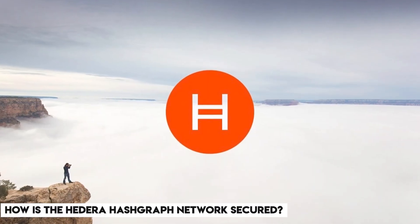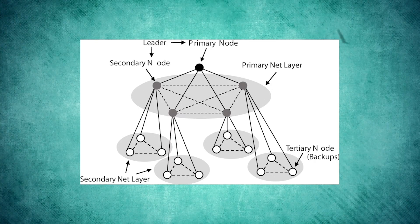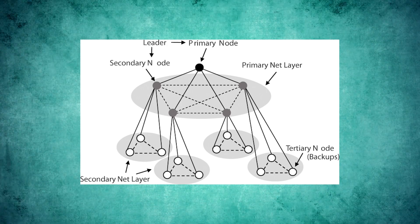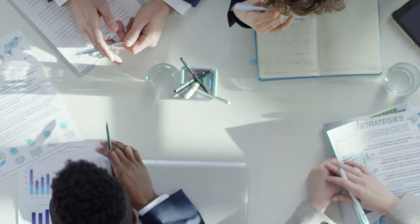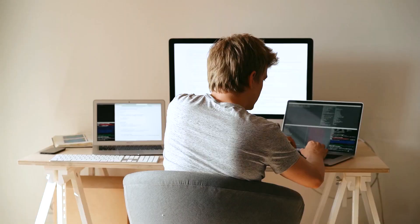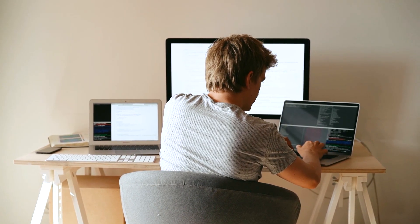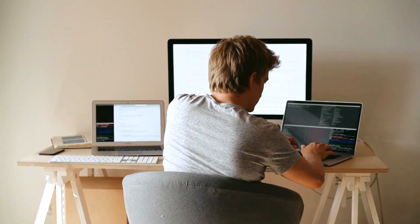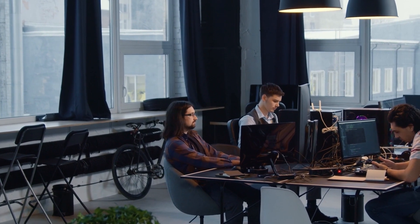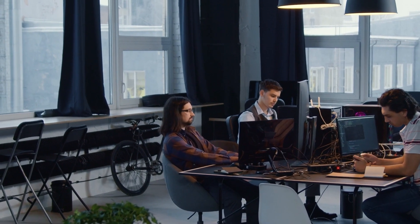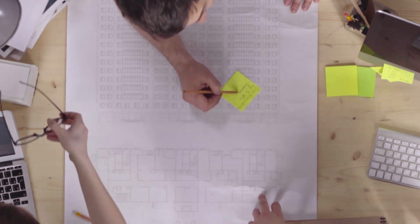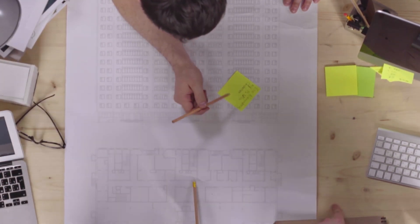How is the Hedera Hashgraph network secured? The Asynchronous Byzantine Fault-Tolerant (ABFT) Consensus Algorithm is used by the Hedera Hashgraph network for its security. This algorithm has been mathematically proven to provide optimal security for distributed networks. The source of this algorithm is a computer science exercise called the Byzantine General Issue. The solution, called Byzantine Fault-Tolerance, can reach a reliable consensus even if there are some false messages, and this is the basis of Hedera's approach to effective trading on a decentralized open ledger.